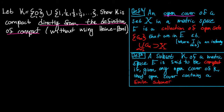Let K equal the set containing zero, union the set containing one, one-half, one-third, one-fourth, and so on. Show K is compact directly from the definition of compact, without using Heine-Borel.